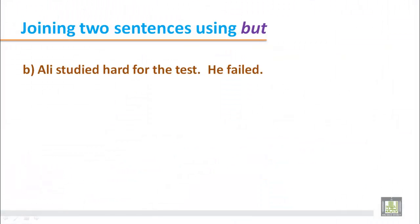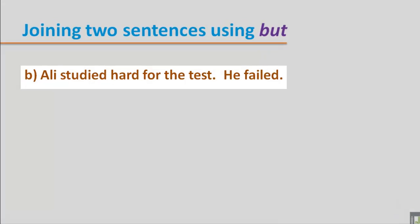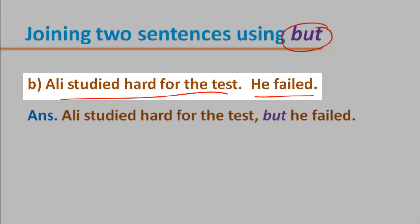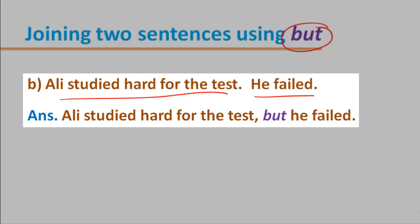Sentence B: Ali studied hard for the test. He failed. These two sentences are contrasting each other. The first one is positive and the second is also positive, but the ideas are contrasting. So we use 'but' as a conjunction: 'Ali studied hard for the test, but he failed.' We put a comma before 'but'.